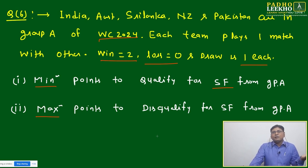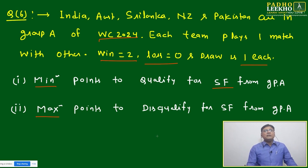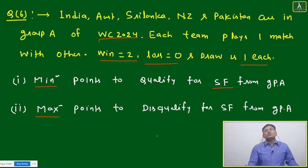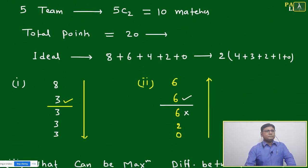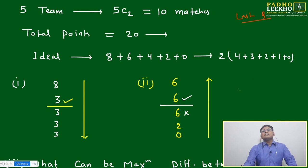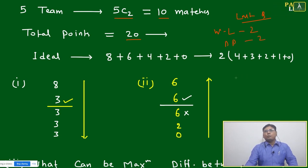The top two teams getting maximum points will qualify for the semi-final. So what is the minimum point any team can have and still qualify, and what is the maximum point a team can get but still be disqualified? There are five teams, total matches = 5C2 = 10 matches, and total points = 20, because whether it's a win/loss or a draw, two points are always distributed. So 20 points total must be distributed among five teams.